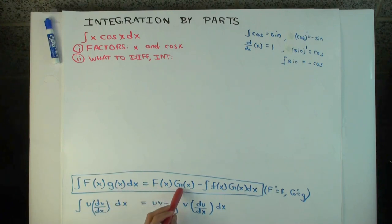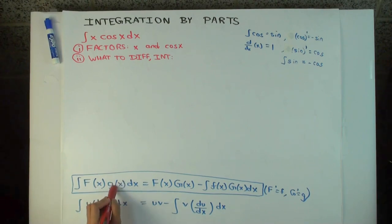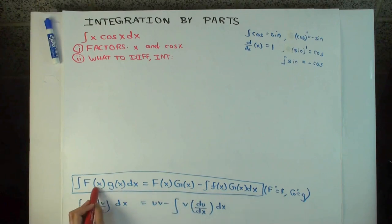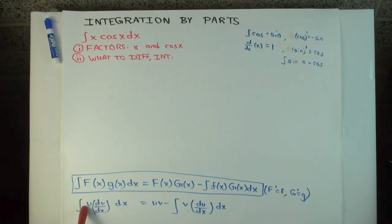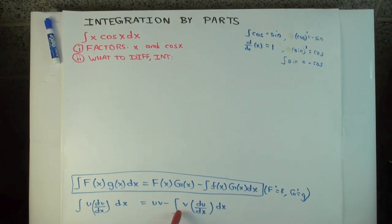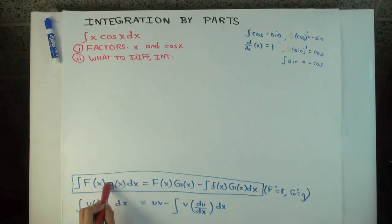In order to apply the formula, you have to decide: of the two factors, which one do you take as capital F — the part you differentiate — and which one do you take as little g — the part you integrate. If you want to use the uv notation, what you have to decide is which part is u, which we are ultimately going to differentiate, and which is dv/dx, which we are ultimately going to integrate to get v.